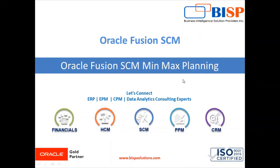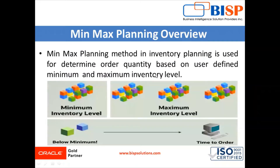Hello everyone, welcome to BSP Solution. My name is Shivam Temre and today's topic is minimum and maximum planning — min-max planning — in Oracle Fusion Supply Chain Management application. Min-max planning in inventory planning is used to determine order quantity based on user-defined minimum and maximum inventory levels.